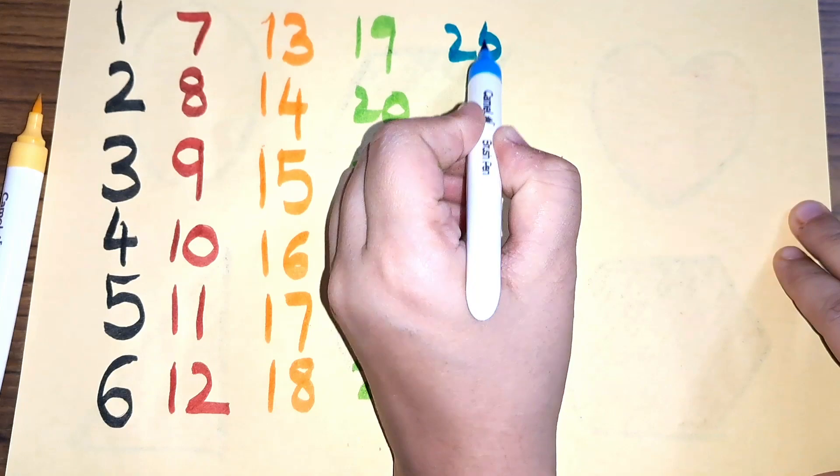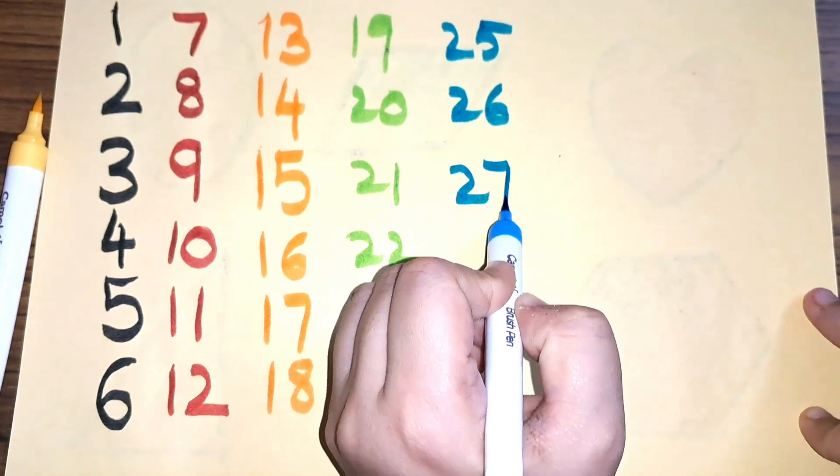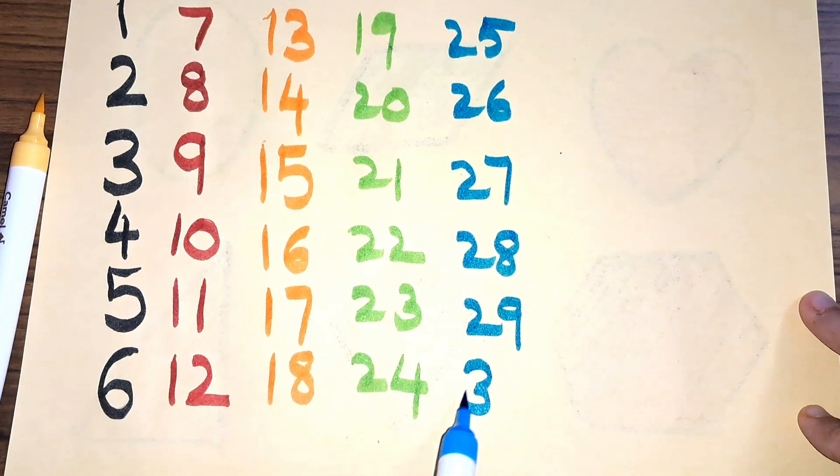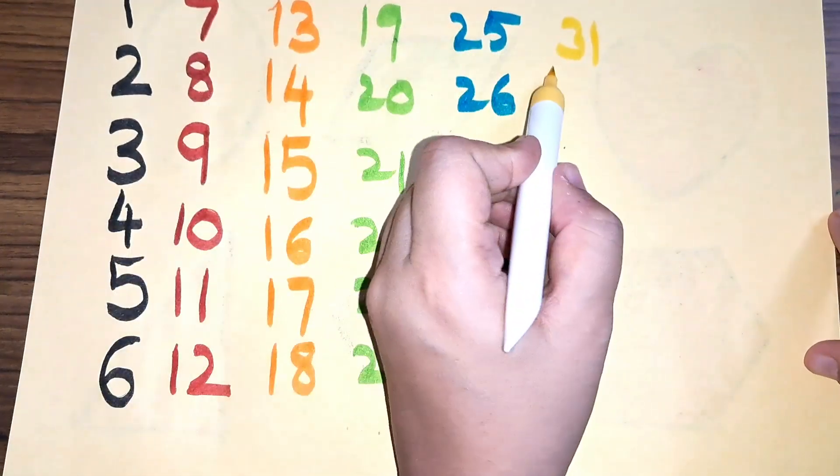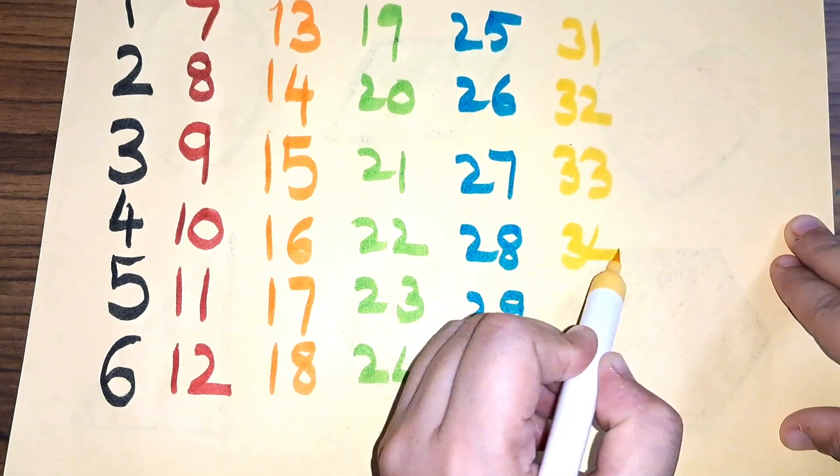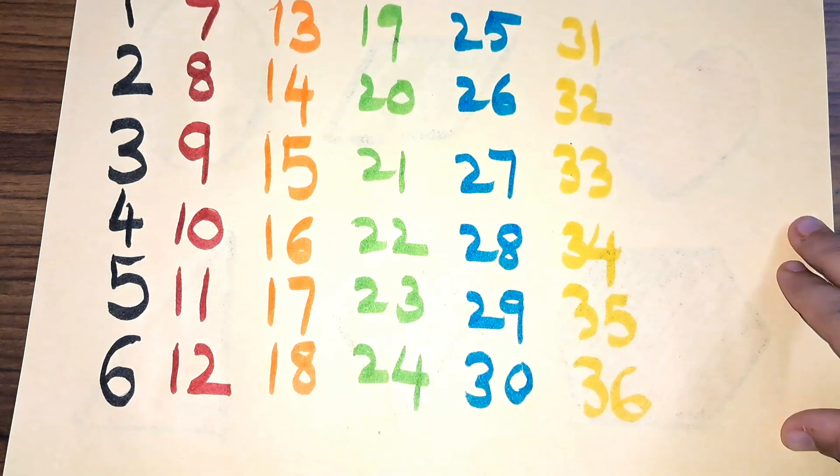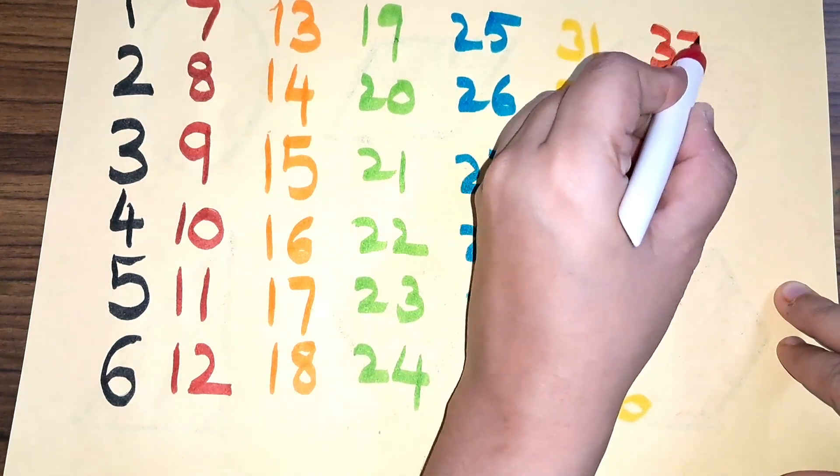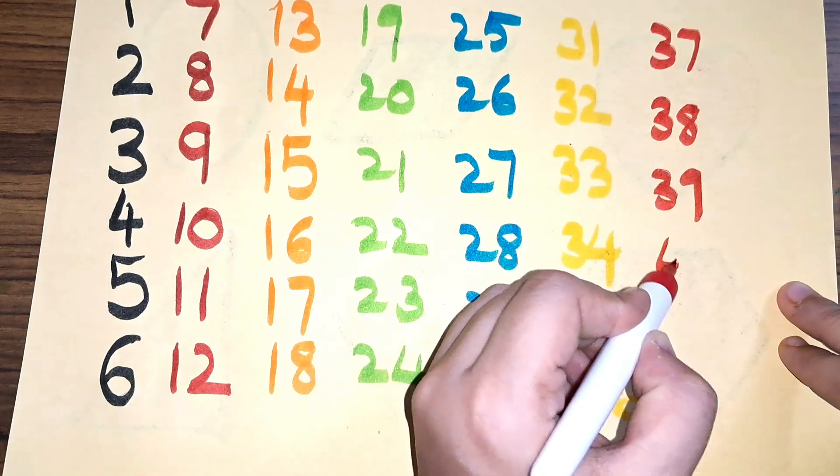Twenty-five, twenty-six, twenty-seven, twenty-eight, twenty-nine, thirty, thirty-one, thirty-two, thirty-three, thirty-four, thirty-five, thirty-six, thirty-seven, thirty-eight, thirty-nine, forty.